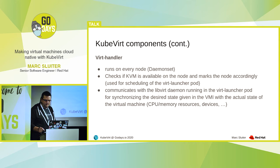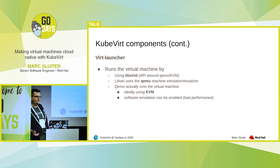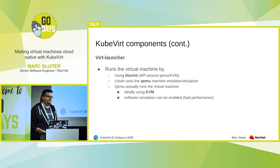When the virt handler needs to handle an actual VMI, it communicates with the libvirt daemon running in the virt launcher pod and tries to synchronize the declared state with the given state of the virtual machine. So the virt launcher is the component which is actually starting the virtual machine by using a libvirt daemon. That one is talking to QEMU, which is a hypervisor that ideally uses the KVM kernel feature for starting the VMs. You can also enable software emulation, so you don't need KVM, but that is not recommended because it has really bad performance.